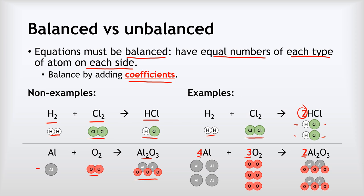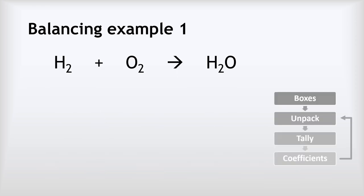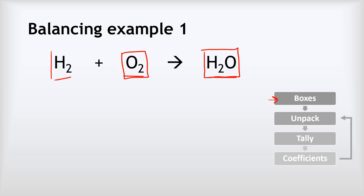The big question is: how do we balance equations — what's the trick? We're going to work through some examples. Our first example is making water: H₂ plus O₂ makes H₂O. People often ask can't we just write H₂O₂ — but H₂O₂ isn't water, so we can't do that. We can't balance equations by changing the small subscript numbers. So the first step of our method is to draw boxes around each substance to remind us we can't change anything inside the boxes.